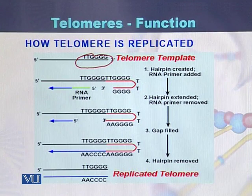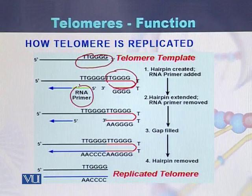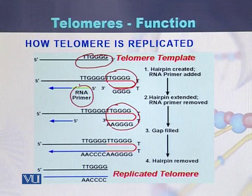In the first step, a hairpin is created and an RNA primer is added. The RNA primer binds to the template sequence. In the second step, the hairpin is extended and the RNA primer is removed. We can see that the hairpin has been extended while the RNA primer at that location has been removed.